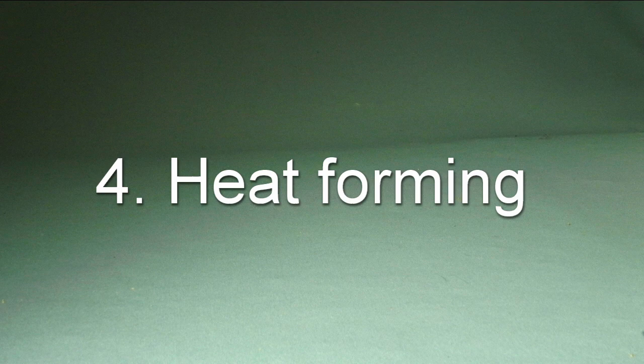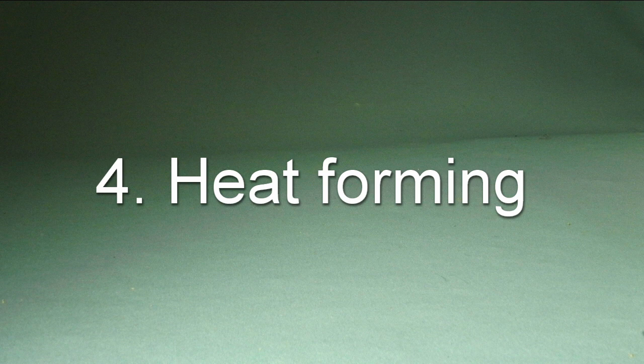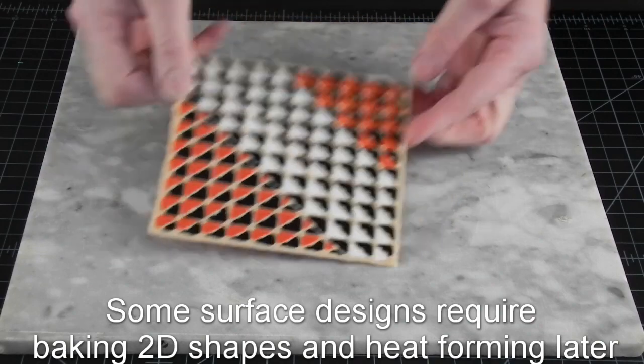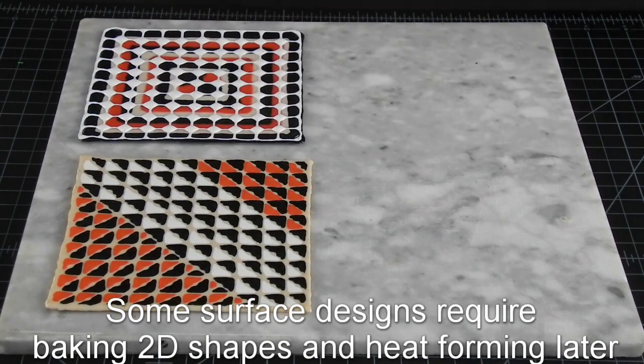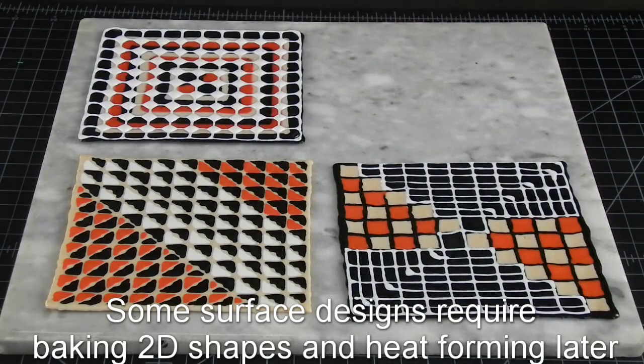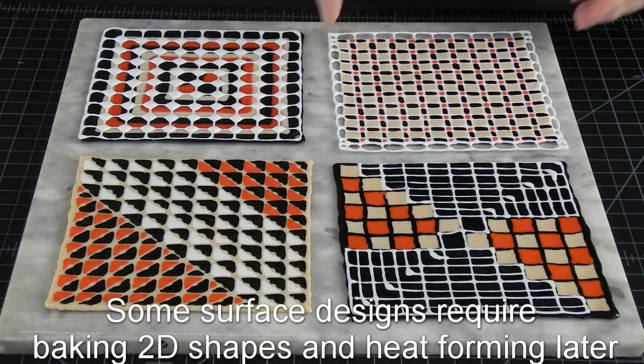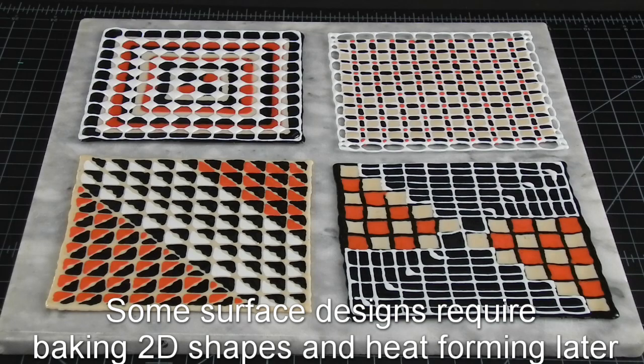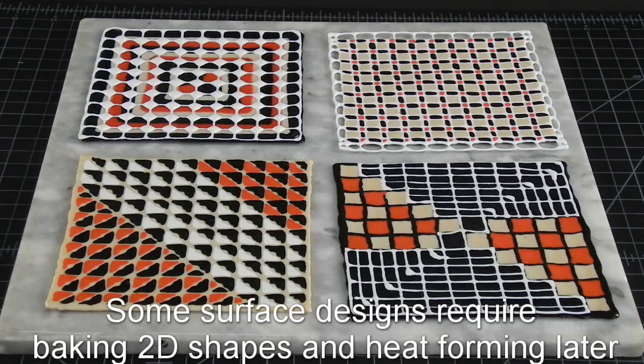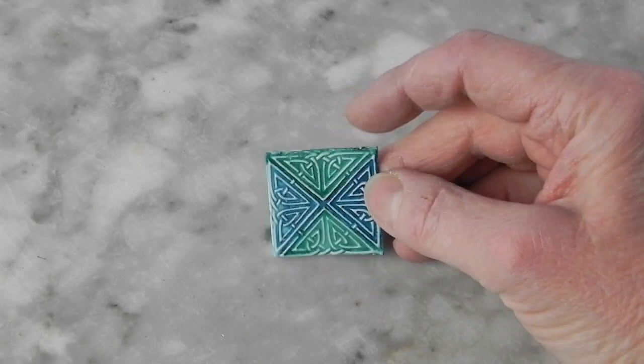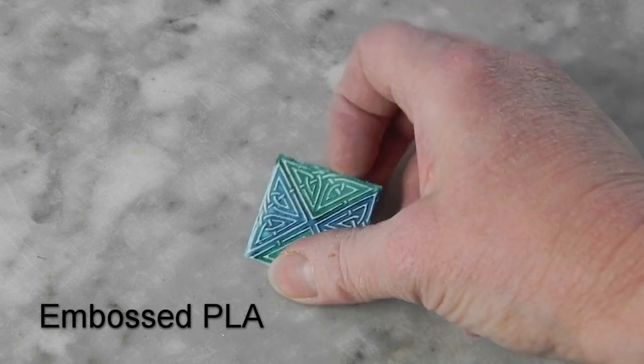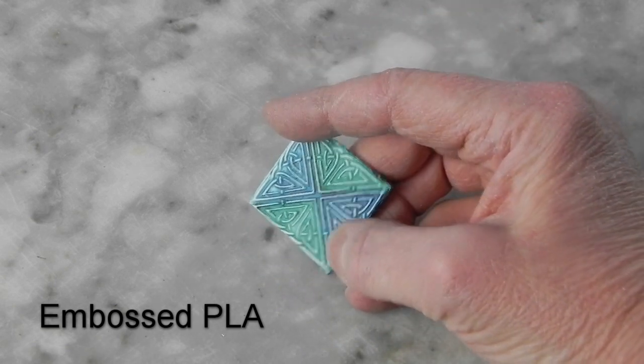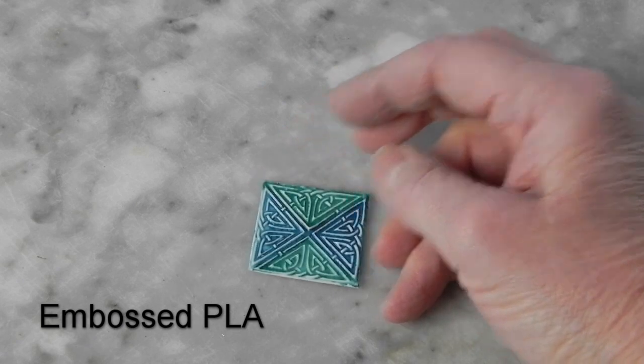Heat forming can take many forms and will require a separate video or two. So for now, just a word about why you would want to use it. A, flat shapes are easier to make and B, you can do all kinds of surface treatments that can only be done to flat pieces. You can for example smooth things with baking without having to sand it or emboss textures in it in a variety of ways. But you need to do that while it is still flat and then form it into a desired shape.